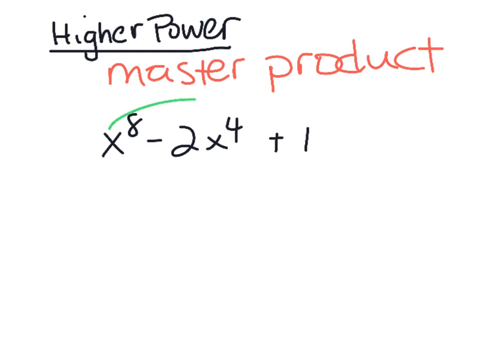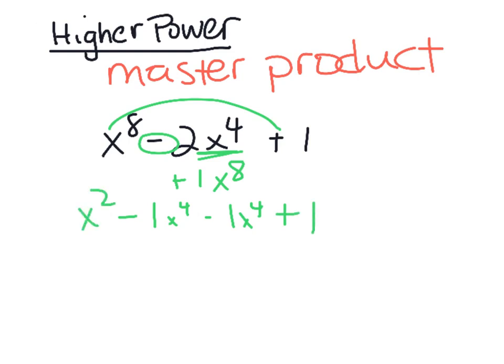Multiply the first term times the last: 1·x⁸ = +x⁸. Find two numbers that multiply to 1 and add to 2: that's 1 and 1. They must yield x⁸ when multiplied and x⁴ when added, so both are −x⁴ (same, negative sign). Bring down the ends and factor by grouping: GCF of the first group is x⁴, giving x⁴(x⁴−1).